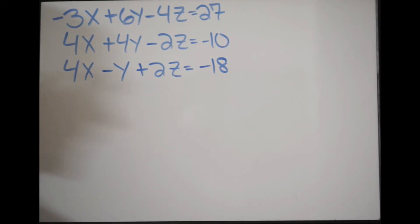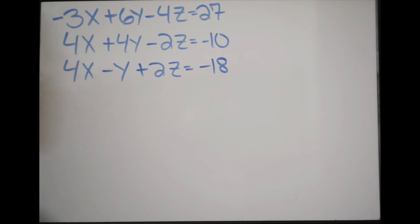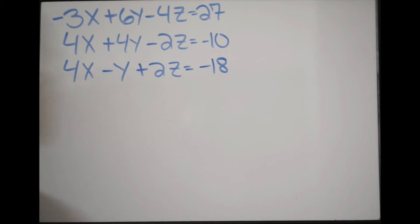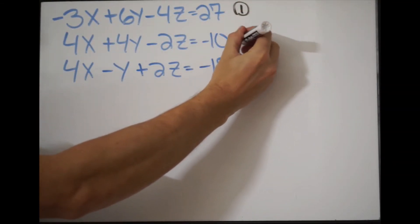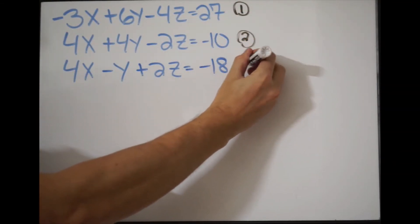In this example we have to solve the 3x3 system of equations. We have 3 equations and 3 variables which we must solve for. Before trying this video, make sure you know how to solve a 2x2 system of equations before moving on to this particular example. When we're solving a 3x3 system of equations, our goal is to bring it down to a 2x2. So I'm going to label all of my equations: equation 1, 2, and 3.